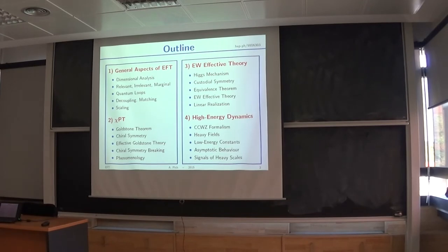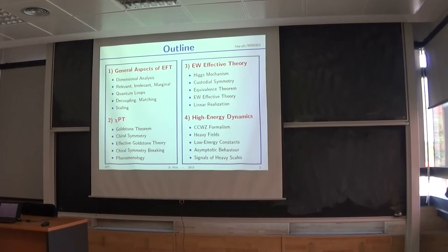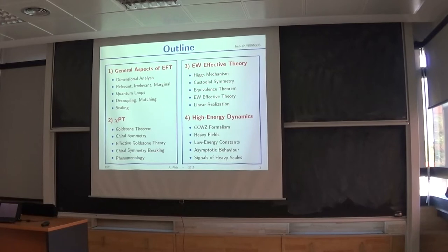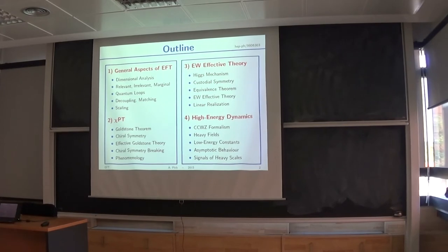I will start with very general concepts of effective field theory, which have broad validity in many parts of physics. Then I will try to explain a little bit of effective field theory in QCD — what is called chiral perturbation theory — and then enter into the fashionable subject nowadays, which is electroweak effective theory. I put a fourth topic, which for me is the most interesting: making a matching between the effective theory and whatever fundamental theory lies below. But the technicality goes up, so probably I will just say a few things, and if somebody is interested we can talk afterwards.